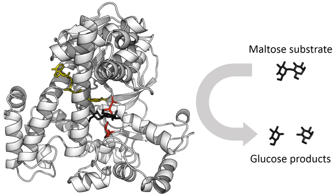For example, hexokinase is a transferase that adds a phosphate group to a hexose sugar, a molecule containing an alcohol group, with the EC designation EC 2.7.1.1.